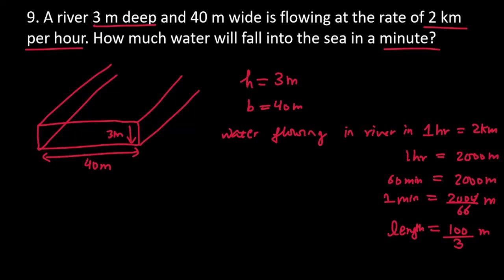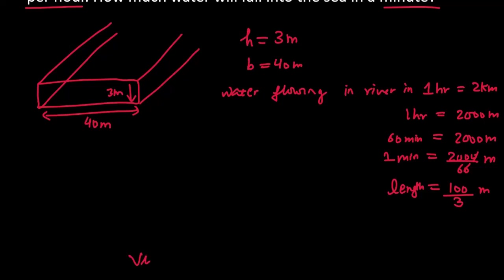What do you want to do? The volume is the volume. And what will happen in this case? The length into breadth into height. 100 over 3 into 40 into 3. 3 to 3 cancel.